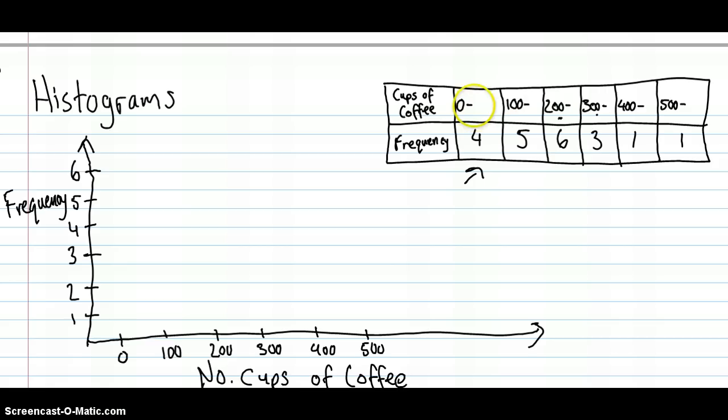Alright, let's start putting our data in. So in our first group, we had between 0 and 100 cups of coffee, not including 100 though. And there were 4 people who had that. So for this section here, the frequency is 4. And I'm going to mark that with a little bar, or a box, a rectangle. Notice I've left a gap here, just before the first box. But from that point on, there won't be any gaps in between the boxes that I draw, the bars.